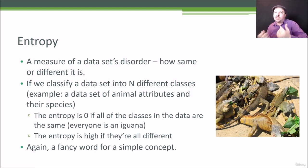Imagine we have a data set of different classifications, for example animals. If all the animals in my data set are iguanas, I have very low entropy because they're all the same. But if every animal is different - iguanas, pigs, sloths, and who knows what else - then I would have higher entropy because there's more disorder in my data set.